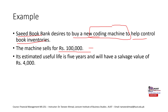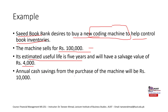They know that once they invest, this machine would have a useful life of 5 years and a salvage value of 4,000. So at the end of the useful life, this machine would have a salvage value of 4,000. The annual cash saving from the purchase of the machine will be 10,000 — each year they would save 10,000, which is essentially a positive cash inflow. The 4,000 salvage value would also be a positive cash flow at the end of year 5.